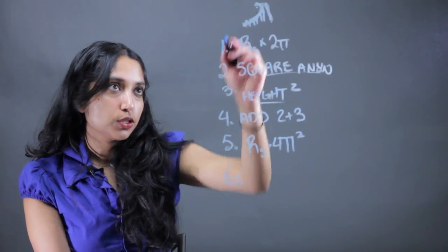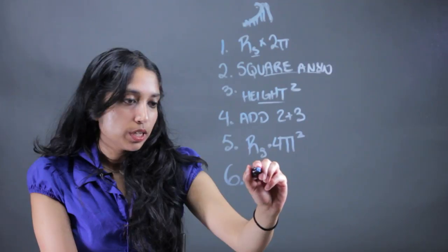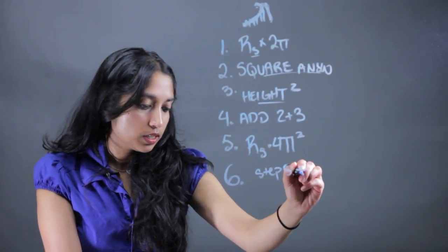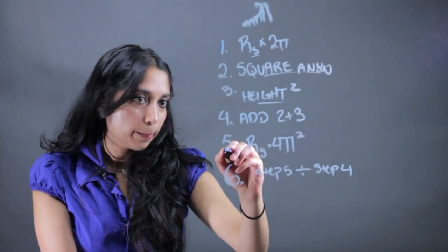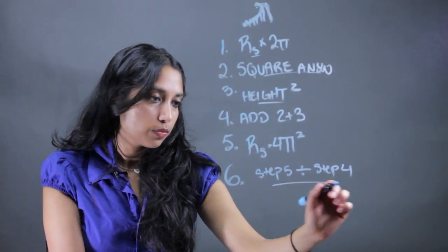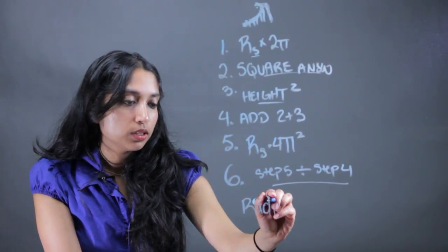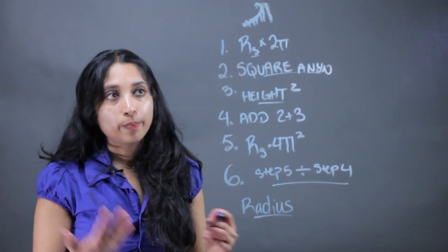And the last step to solve for the radius of that handrail is to take the answer from step 5 and divide it by step 4, that answer we got right there. And that is going to give you the radius of that handrail that is going to go around the sloped or spiral staircase.